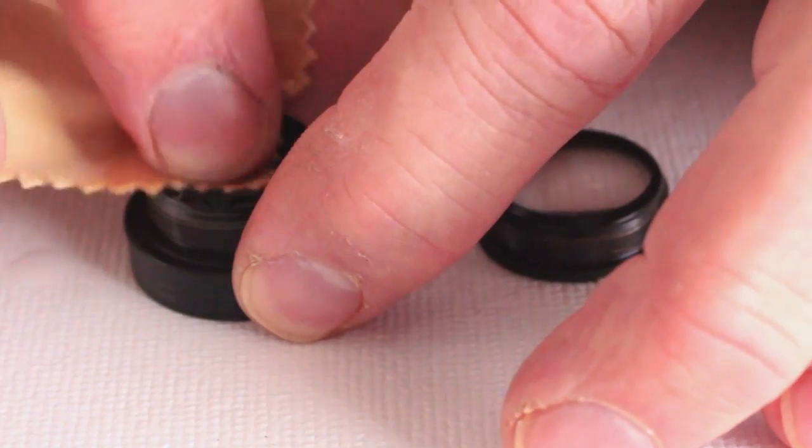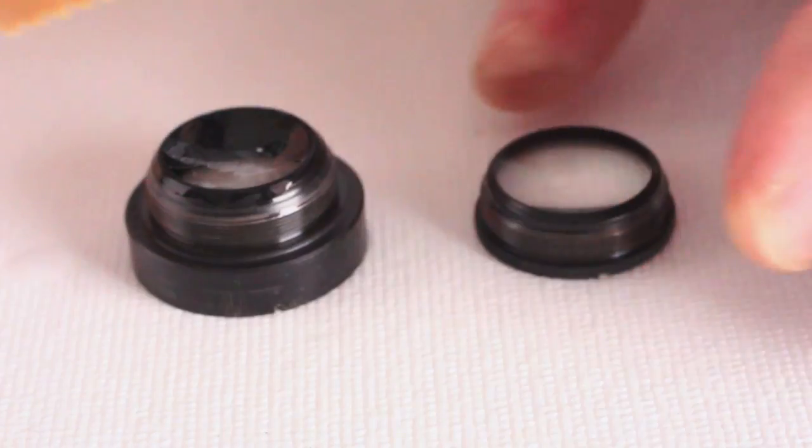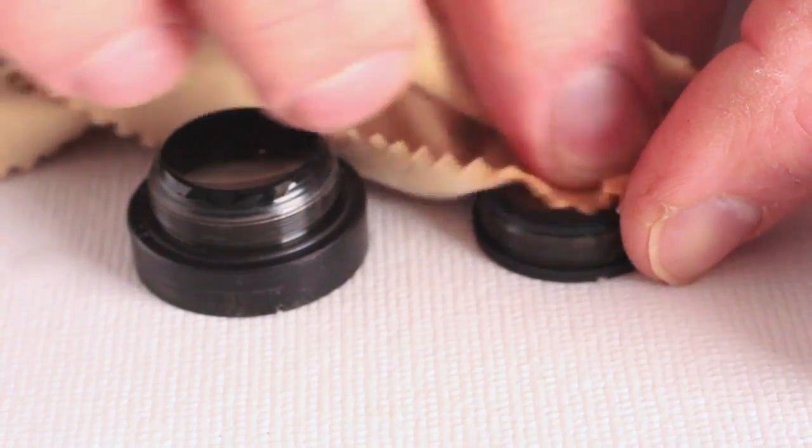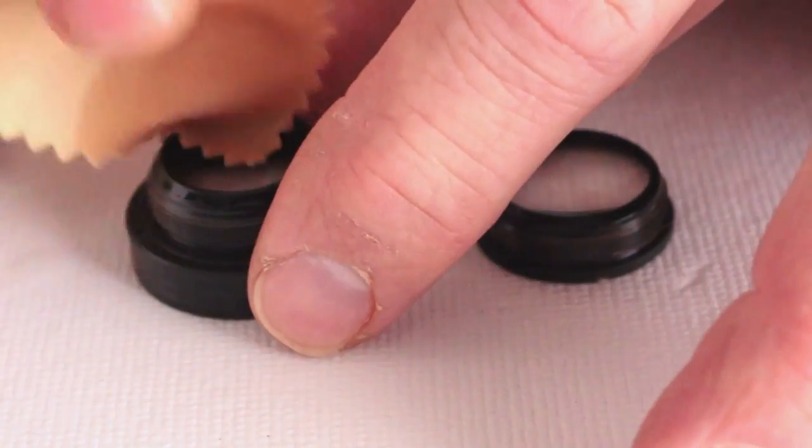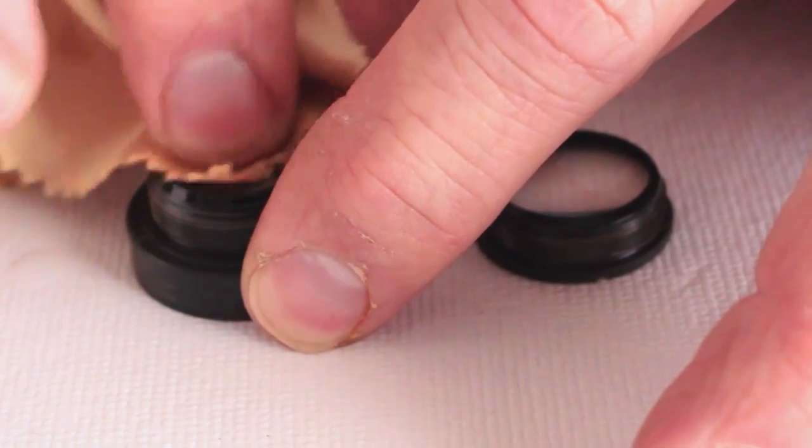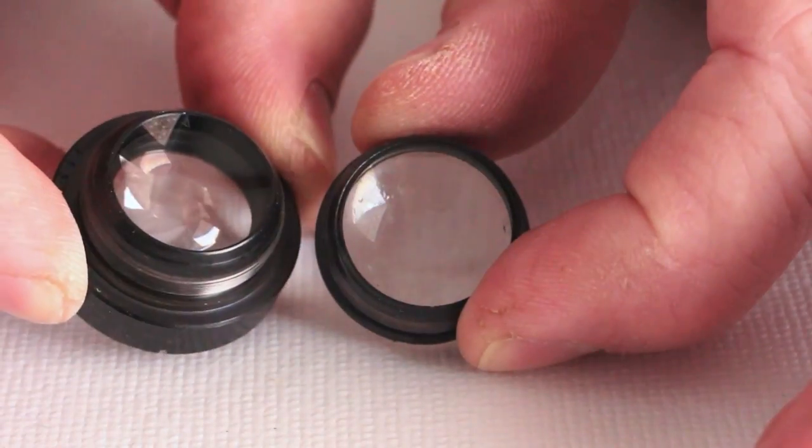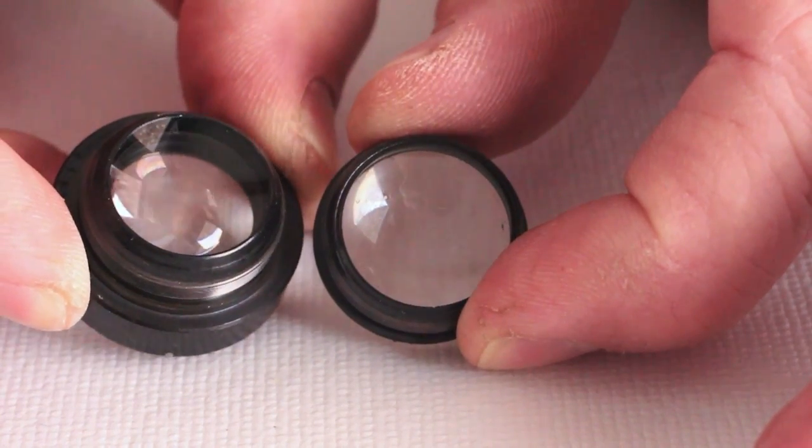Gently scrub the foggy surface of the lenses with a microfiber cloth that has been saturated with a mixture of 5 parts 91% isopropyl alcohol and 1 part Windex type cleaner. Finish cleaning with a dry corner of the cloth.